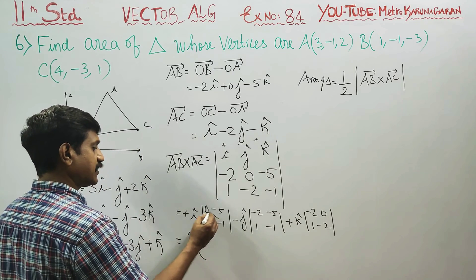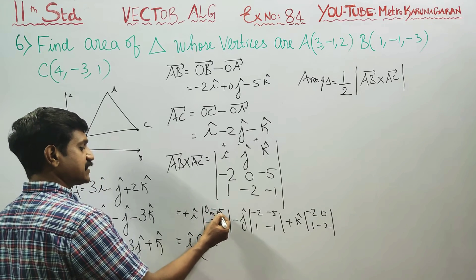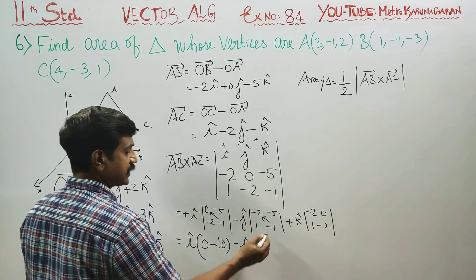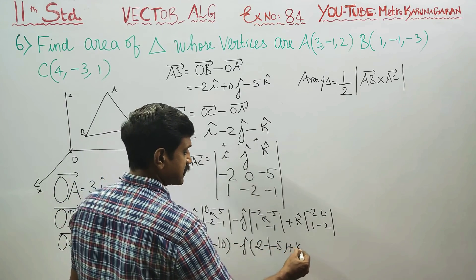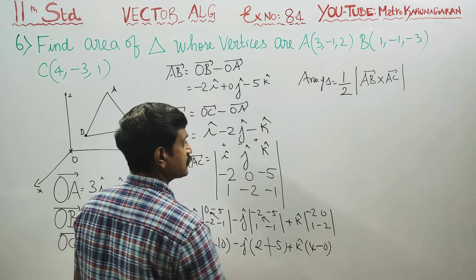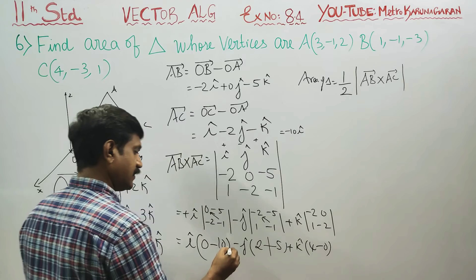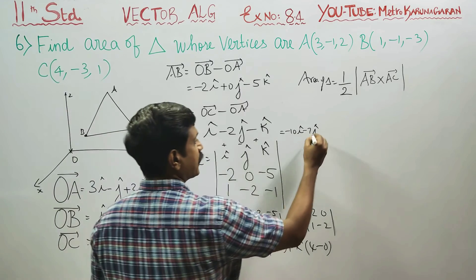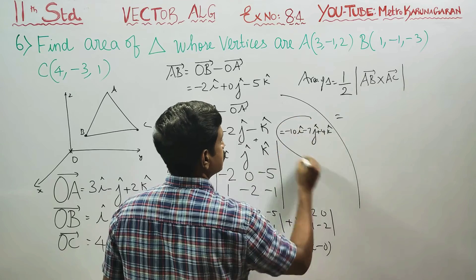Right hand side minus left hand side: for i — (0 times minus 1) minus (minus 5 times minus 2) = 0 minus 10 = minus 10. For minus j — (minus 2 times minus 1) minus (minus 5 times 1) = 2 plus 5 = 7, so minus 7j. For k — (minus 2 times minus 2) minus (0 times 1) = 4 minus 0 = 4k. So AB cross AC = minus 10i minus 7j plus 4k.